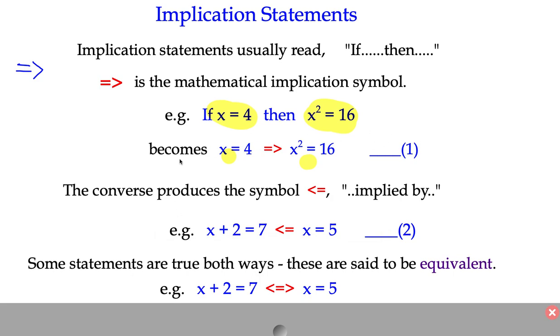But if you have a look at statement one, for instance, then that's not, let's go back to this one here. x equals 4 implies x squared equals 16. It's quite clear that that's not reversible, because x squared equals 16. Does that imply that x equals 4? Well, no, because x could be negative 4.